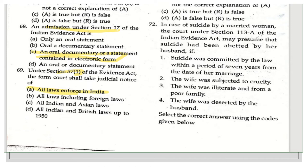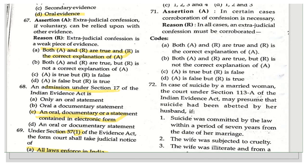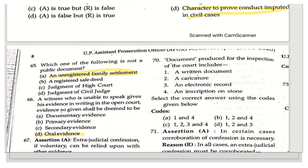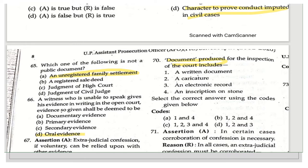The next question asks what documents produced for the inspection of courts include. The options given include a written document, a caricature, an electronic document, and an inscription on stone. The correct answer is option C — it covers all these things: a written document, a caricature, an electronic document, and an inscription on stone, all within the definition of a document.